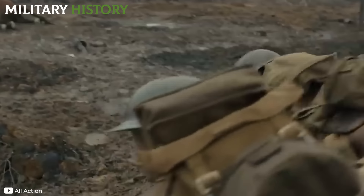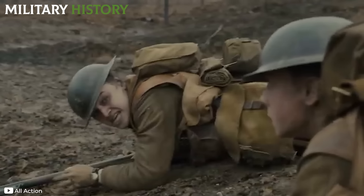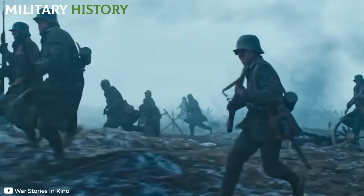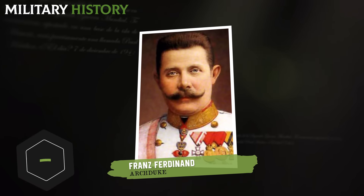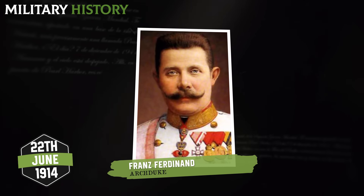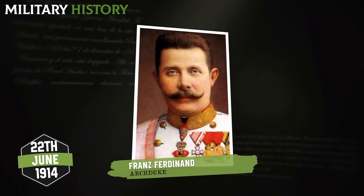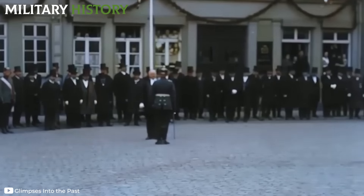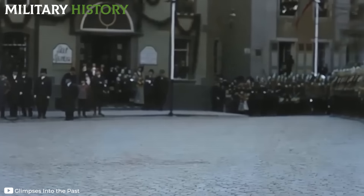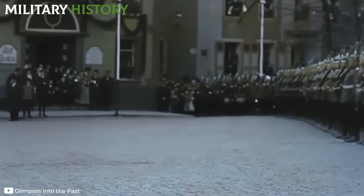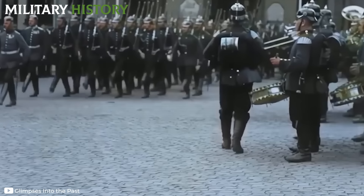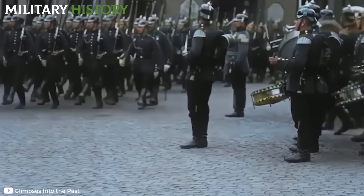The First World War, also known as the Great War, was unleashed in a context of political, economic, and territorial tensions that had been accumulating over decades in Europe. The assassination of Archduke Franz Ferdinand of Austria in Sarajevo on June 28, 1914, served as a trigger for a conflict that, in reality, had much deeper roots. The underlying causes of the war can be traced back to exacerbated nationalism, imperialism, and military alliances that characterized international relations at the time.